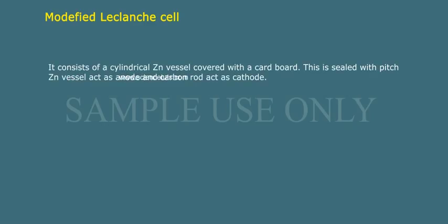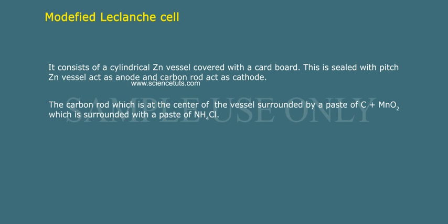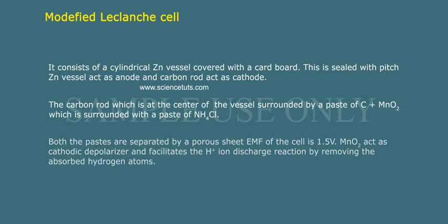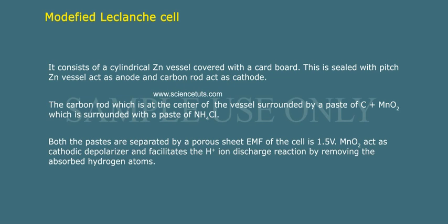Modified Leclanchè cell: It consists of a cylindrical zinc vessel covered with cardboard, sealed with pitch. The zinc vessel acts as the anode and the carbon rod acts as the cathode. The carbon rod, at the center of the vessel, is surrounded by a paste of C plus MnO₂, which is surrounded by a paste of NH₄Cl. Both pastes are separated by a porous sheet. The EMF of the cell is 1.5 volts. MnO₂ acts as a cathodic depolarizer and facilitates the H⁺ ion discharge reaction by removing absorbed hydrogen atoms.